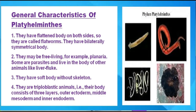Now we will discuss the general characteristics of this phylum. First, they have a flattened body on both sides, so they are called flatworms, and they have a bilaterally symmetrical body. They may be free-living, for example planaria, or some are parasites that live in the body of another animal, like the liver fluke.